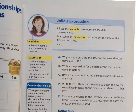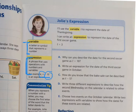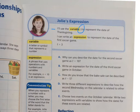Let's look at some definitions. A variable is a letter or symbol that represents a number — remember, I used the letter M. An expression is a phrase that uses an operation with numbers and variables; for example, N plus 10. Jolie said she'll use the variable T to represent the date of Thanksgiving. So if Thanksgiving is T, she can write an expression to represent the date of the first soccer game: Thanksgiving plus three, or T plus 3, is the date of the first soccer game.